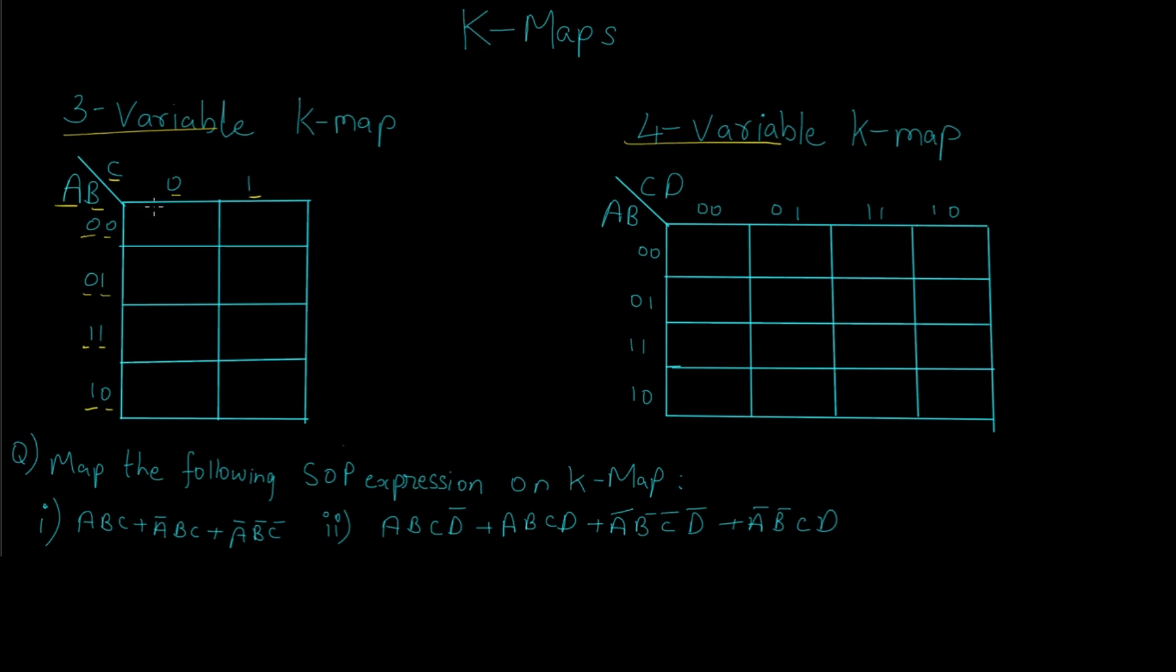Collectively, the address or the binary value for the first cell would be 000, and the corresponding decimal value would be 0. I will fill these values with their respective binary values. I have filled the corresponding values of all possible combinations of the 3 variables A, B, and C.